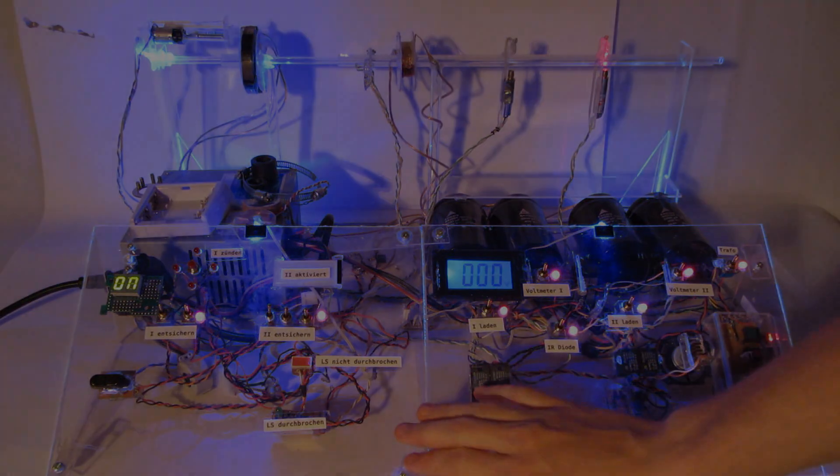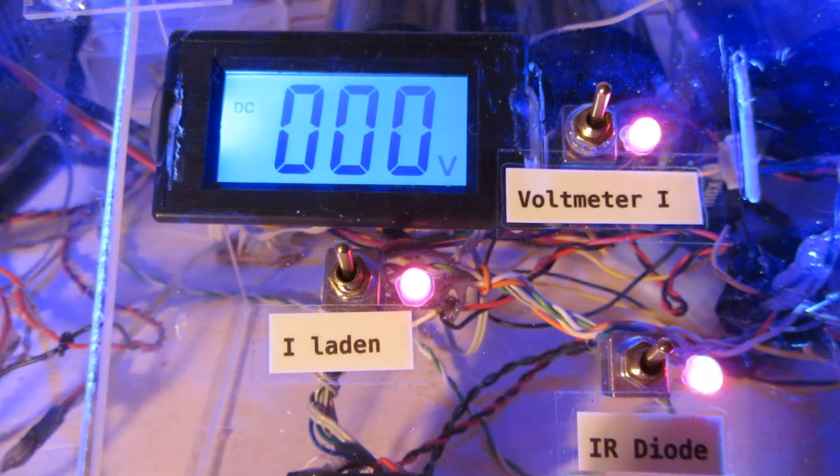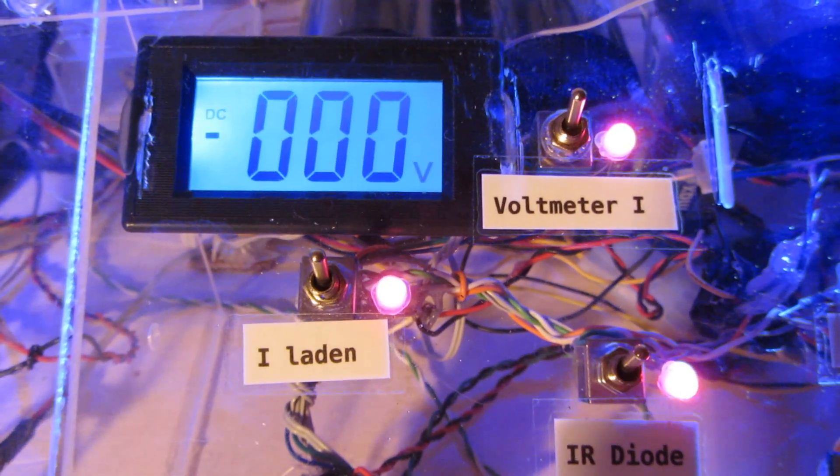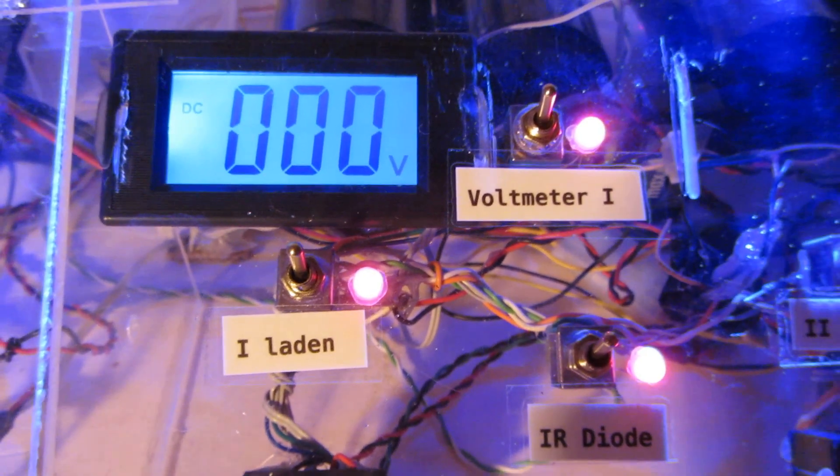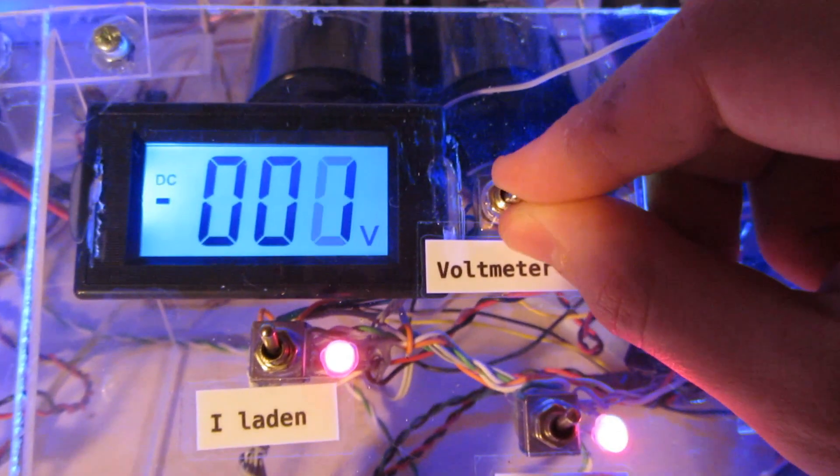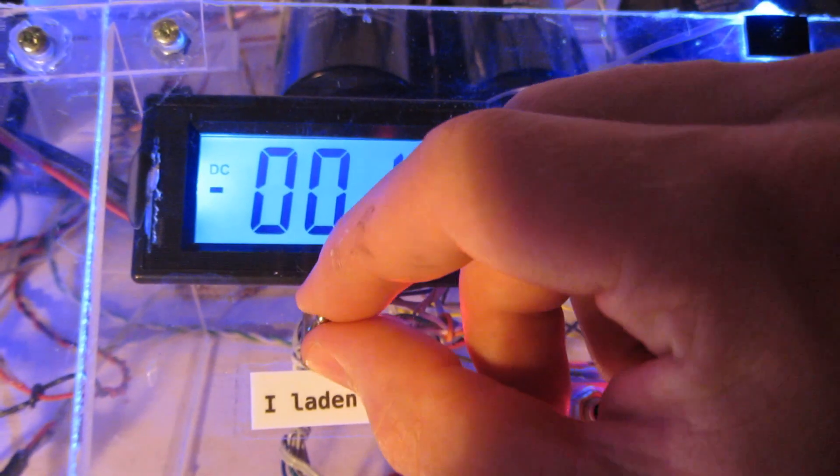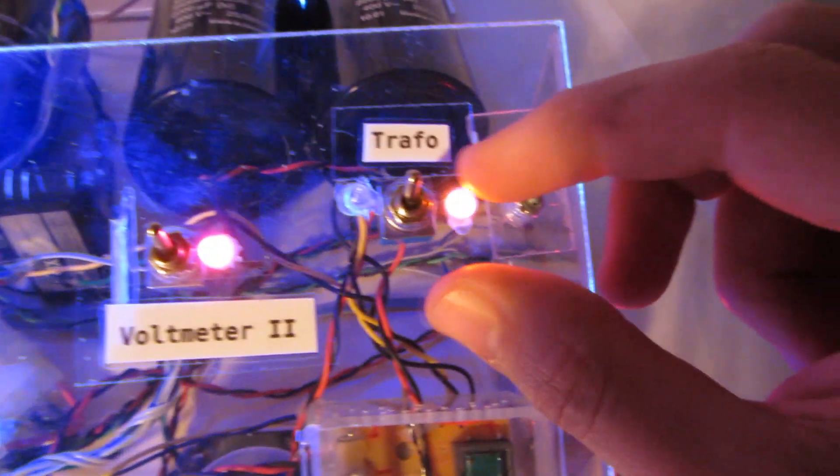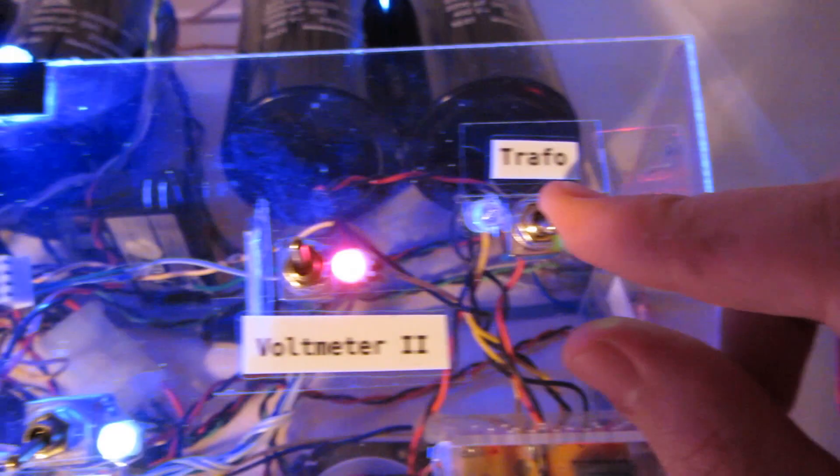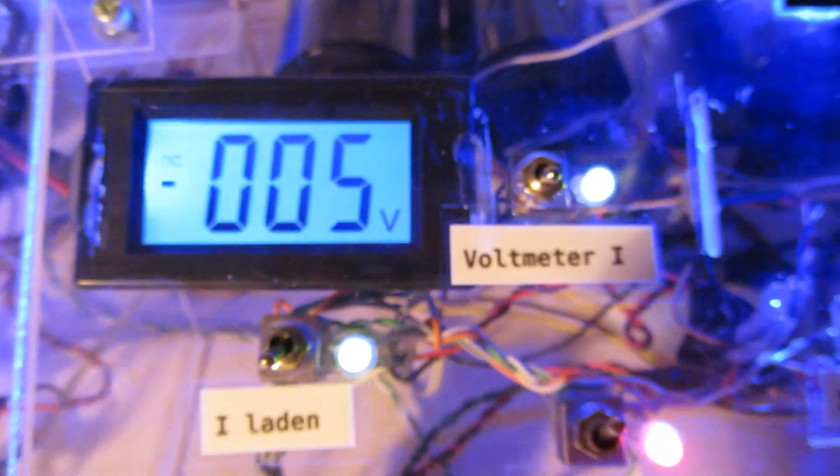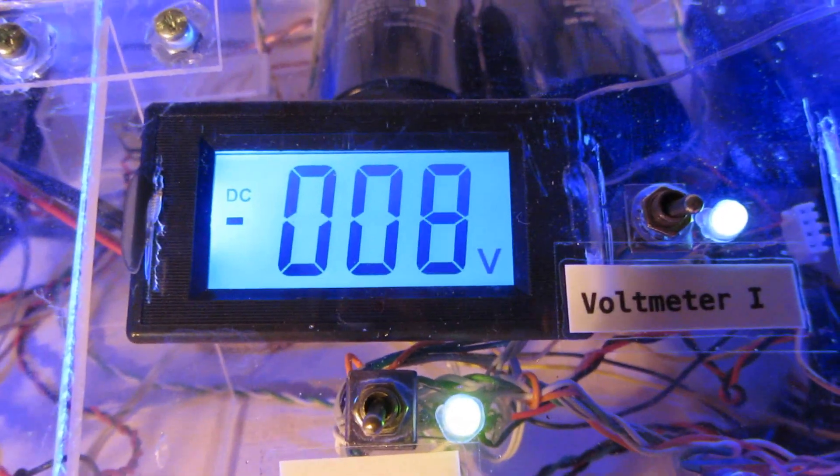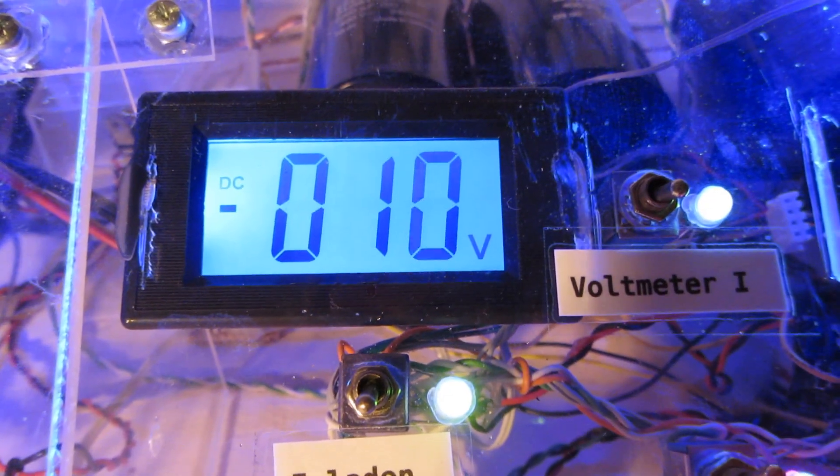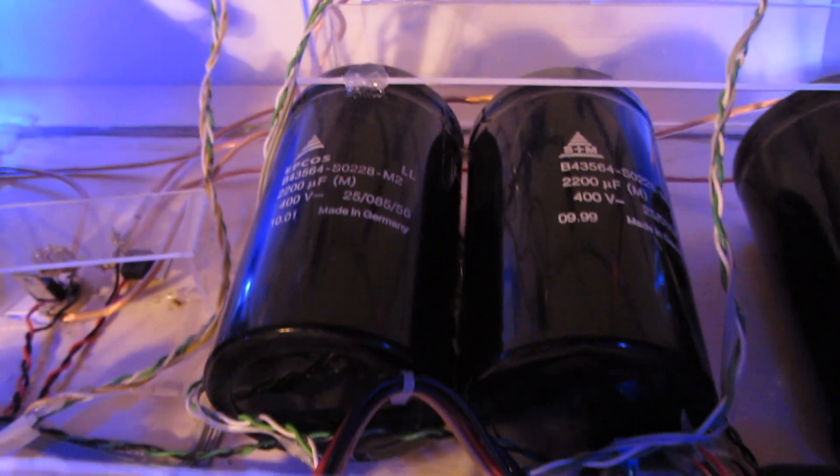I'm going to show you how it works. At the beginning we will have to charge the first and second stage. Now let's activate the multimeter for the first stage, and activate the transformer. As you can see, the charge is building up inside of the two stages.